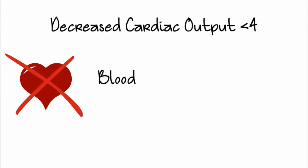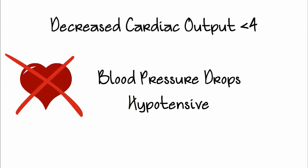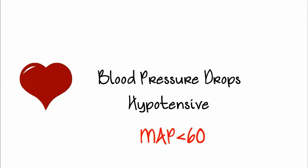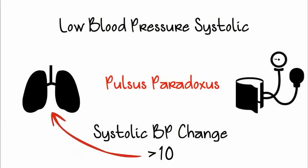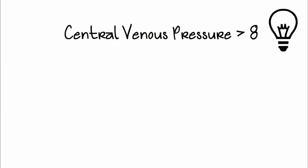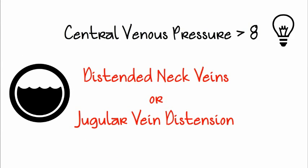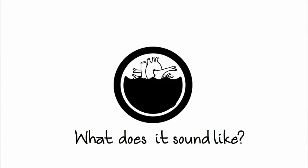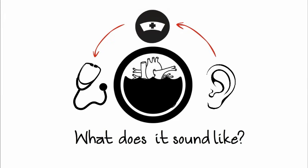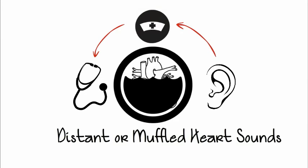This only works for so long, as the blood pressure will drop and the mean arterial pressure will be less than 60. Specifically, we have low systolic blood pressure called pulsus paradoxus, with a systolic change of greater than 10 with each inspiration. CVP greater than 8 shows up as distending neck veins, or jugular vein distension. And what does it sound like? Using our nursing ears, we hear distant or muffled heart sounds.